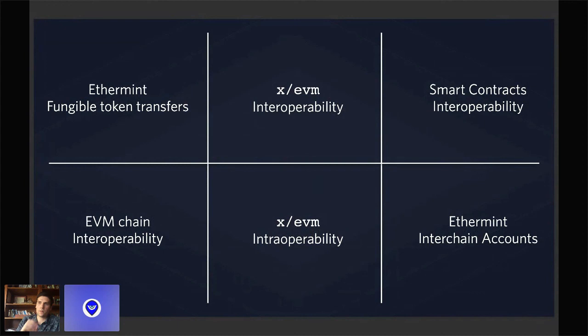For example, if I want to use an atom that I receive within Ethermint through IBC on an Ethereum smart contract that enables DeFi, I'll have to solve this Wrapped ETH problem.